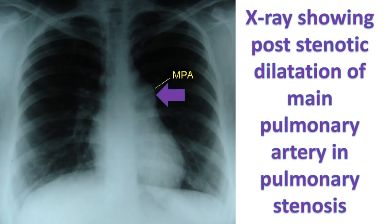Pulmonary stenosis can be documented by echocardiogram. Doppler echocardiography measures the trans-valvular gradient and helps in assessing severity of pulmonary stenosis. Right ventricular hypertrophy, right atrial enlargement, and plethora of the inferior vena cava may be seen in severe cases.